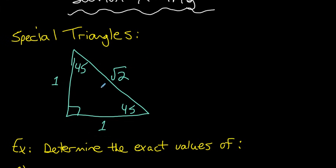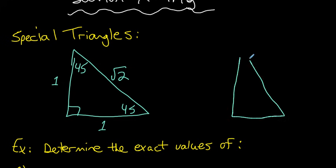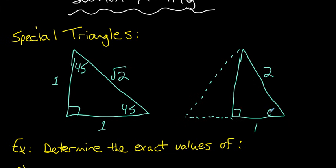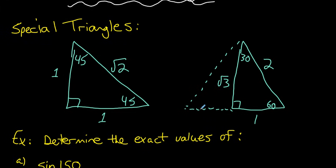Either way, it'll work out the same in the end. The second special triangle is the split-in-half equilateral triangle. Start with a 2-by-2-by-2 equilateral triangle — all angles are 60°. Cut it in half, so one angle becomes 30°. Using the Pythagorean theorem to solve for the remaining side gives us √3. Those are the two special triangles we use to write exact trig values.